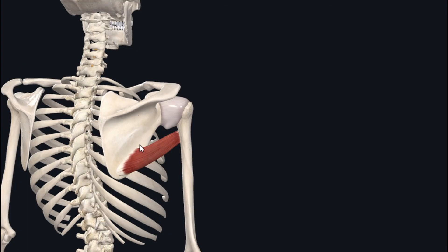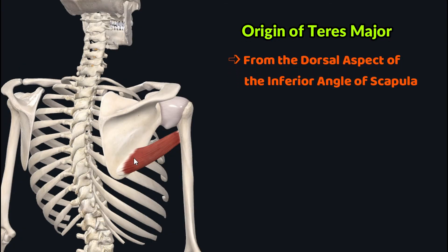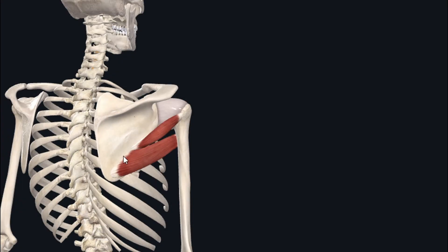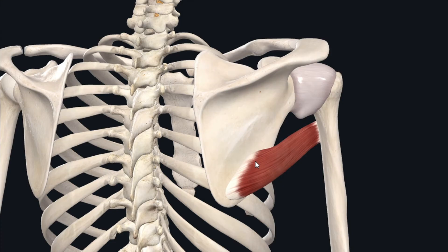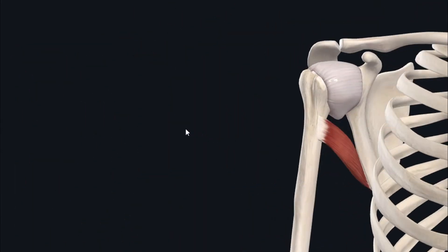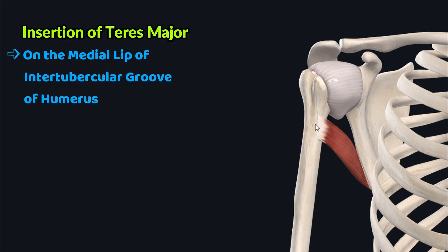The teres major muscle originates from the dorsal aspect of the inferior angle of the scapula. Here on the dorsal aspect of the scapula, the teres major lies just inferior to its fellow muscle, the teres minor, which originates from the lateral border of the scapula, as you can see. From its origin, the teres major muscle travels superolaterally and turns around the anterior aspect of the proximal humerus, inserting through a flat tendon onto the medial lip of the intertubercular groove of the humerus.